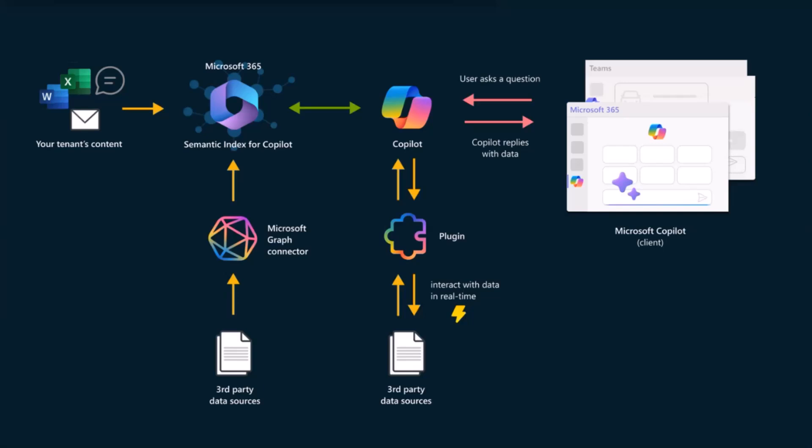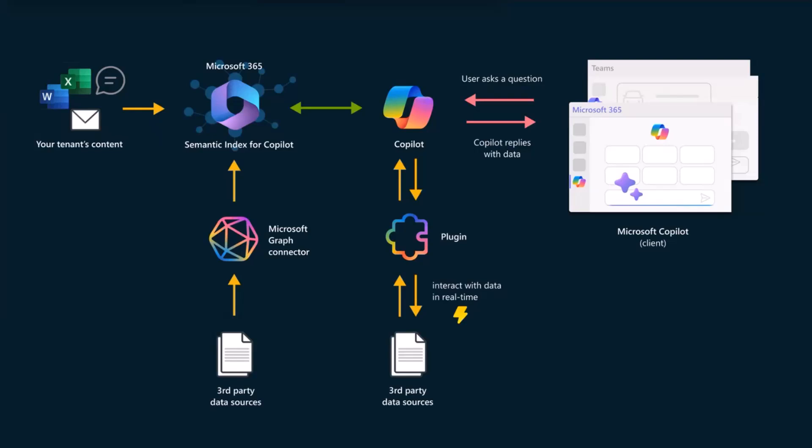The way that it works — you can see along the top here — your tenant's content is all getting pulled into the semantic index, which is a search index organized by the semantic meanings of the words rather than by text. Copilot itself has a few components including a large language model, but also an orchestration layer that consults with the semantic index and the Microsoft Graph to pull your content in real time, feed it along with the user's prompts into the large language model, and then return responses such that the user's data never actually goes into the large language model.